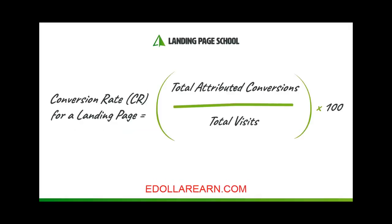First up is conversion rate. It can be formally defined as the percentage of users who take a desired action. You can calculate the conversion rate of your landing page by dividing the total attributed conversions by the total number of visits, and then multiplying that result by 100.